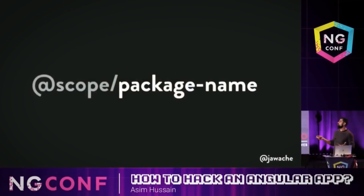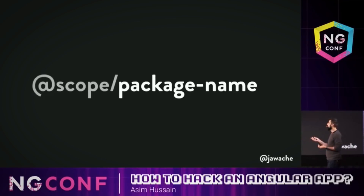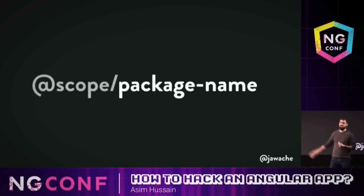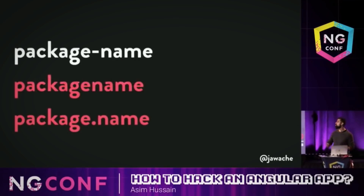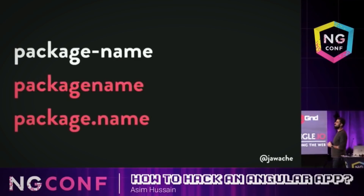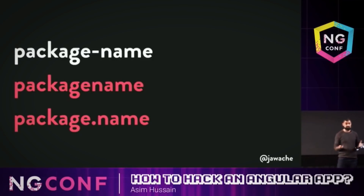So what are some solutions? On NPM, you can install stuff under a scope — a private scope. This probably indicates to you why Angular is under @angular, right? Only if you own the scope can you add any package underneath it. They've also recently added package moniker rules: if there's a package already called package-hyphen-name, you now cannot deploy a package that differs only by punctuation.